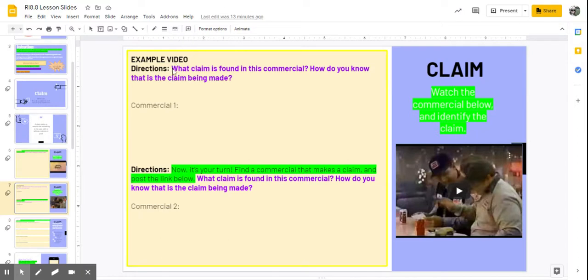So I'm looking at these two questions: what claim is found in the commercial? The thing about commercials that we have to understand is that it's not going to necessarily always tell us what the claim is. Sometimes we have to infer based on what happens.